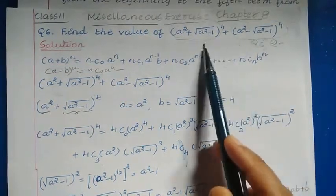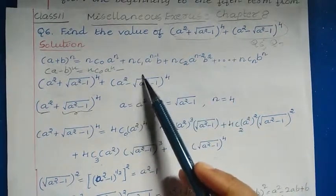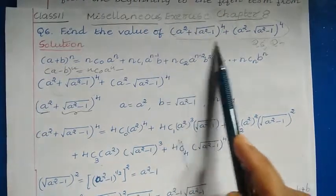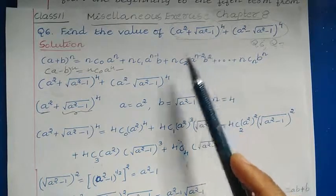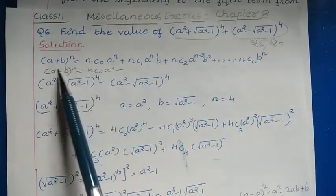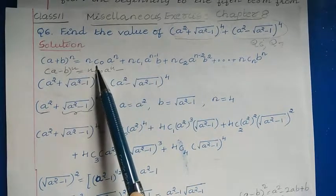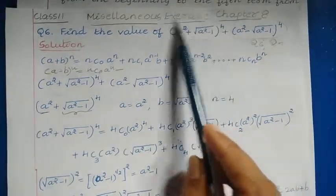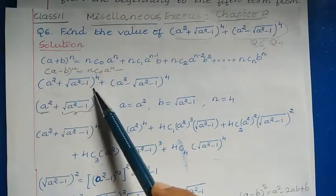We need to evaluate this value, which we can do by using the binomial theorem. We have two expressions — one with a plus sign and another with a minus sign. Let us evaluate each expression using the binomial theorem. First, I am considering the part (a² + √(a²−1))⁴.